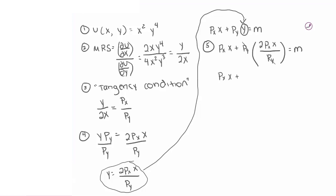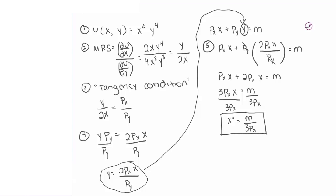Rewriting the budget constraint with the substitution: px times x plus py times (2px times x divided by py) equals m. The py's cancel out, leaving px times x plus 2px times x equals m. Combining like terms gives 3 times px times x equals m. Dividing both sides by 3px, our x-star equals m divided by 3 times the price of x. This tells us for any given income and prices, exactly how much of good x the consumer will want to buy.